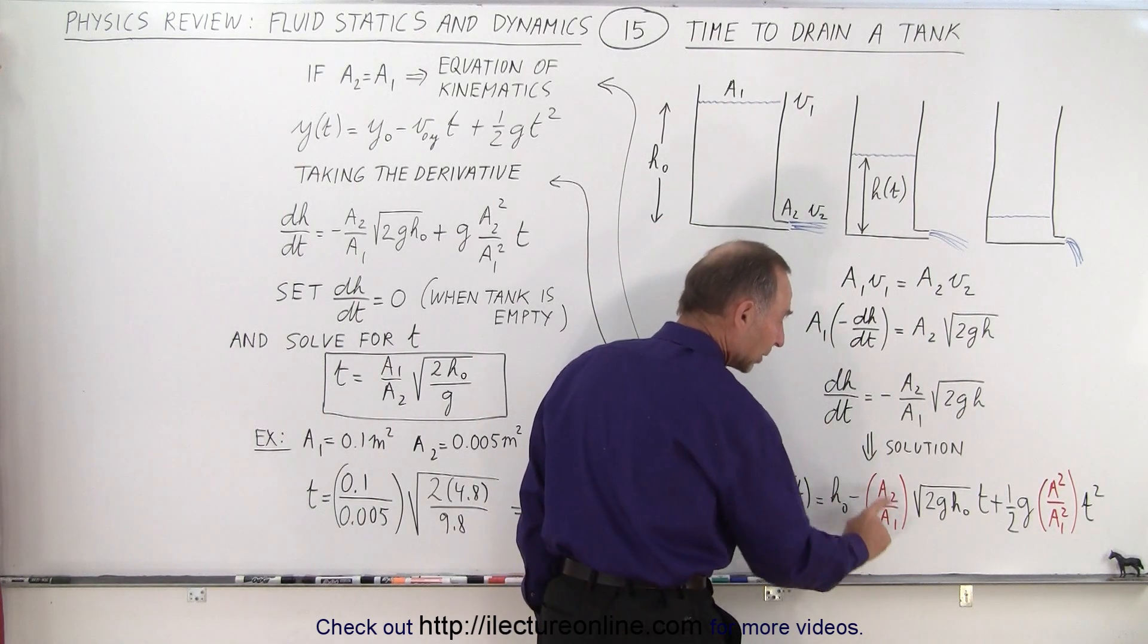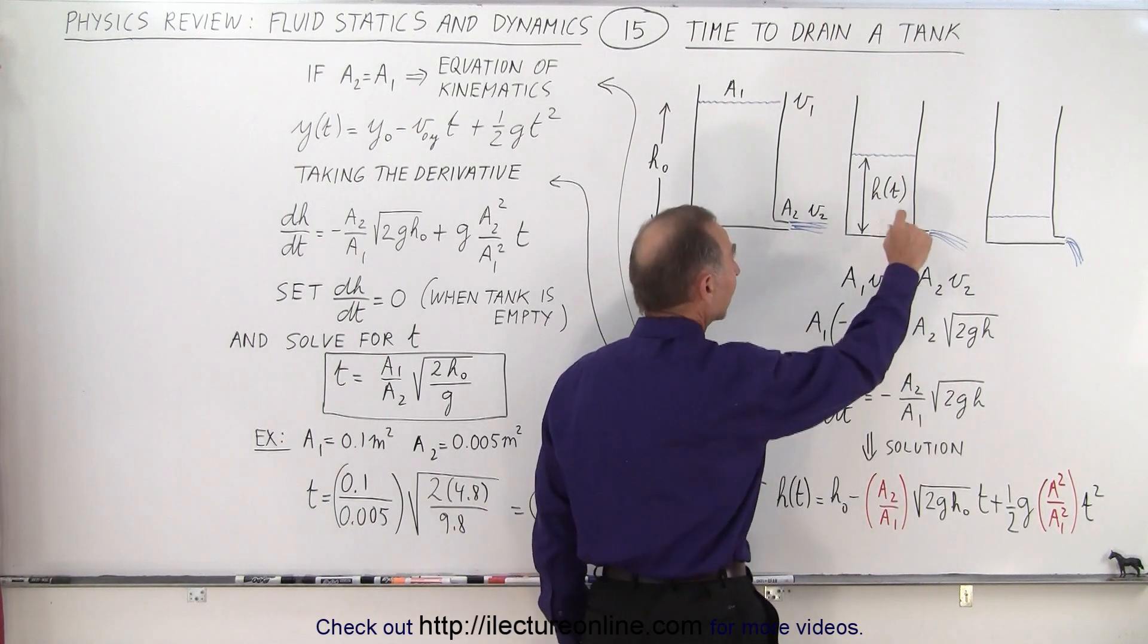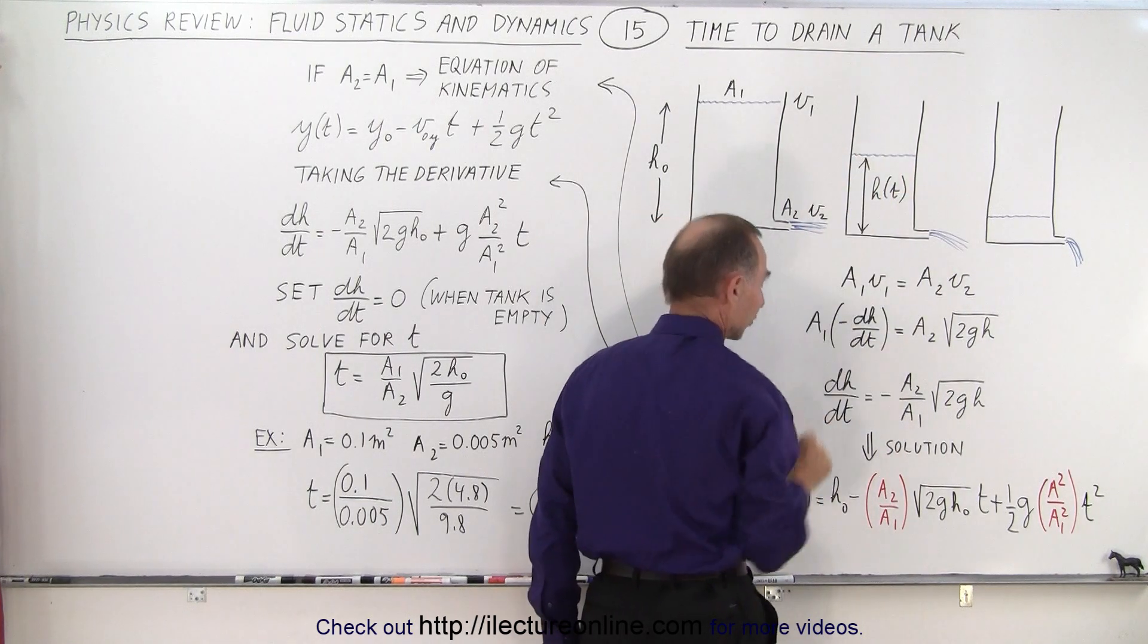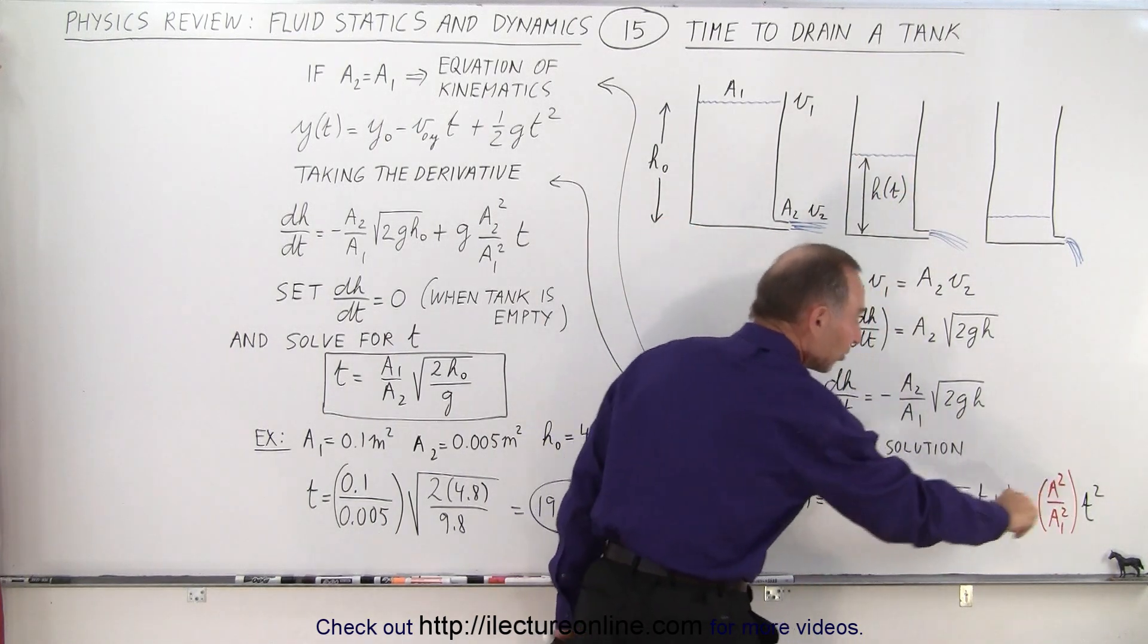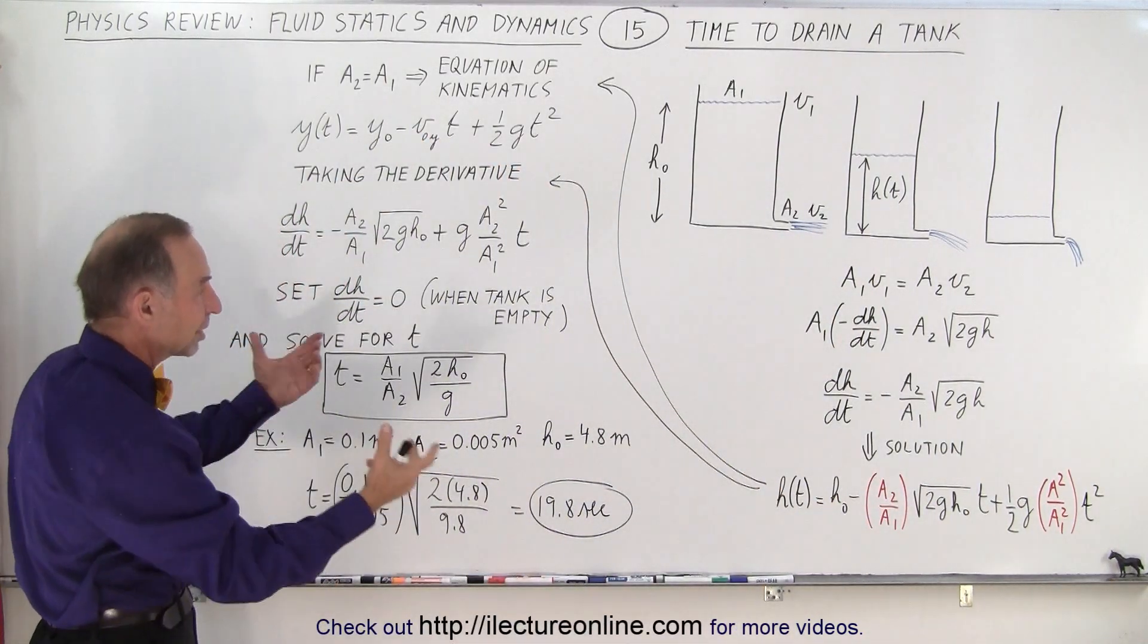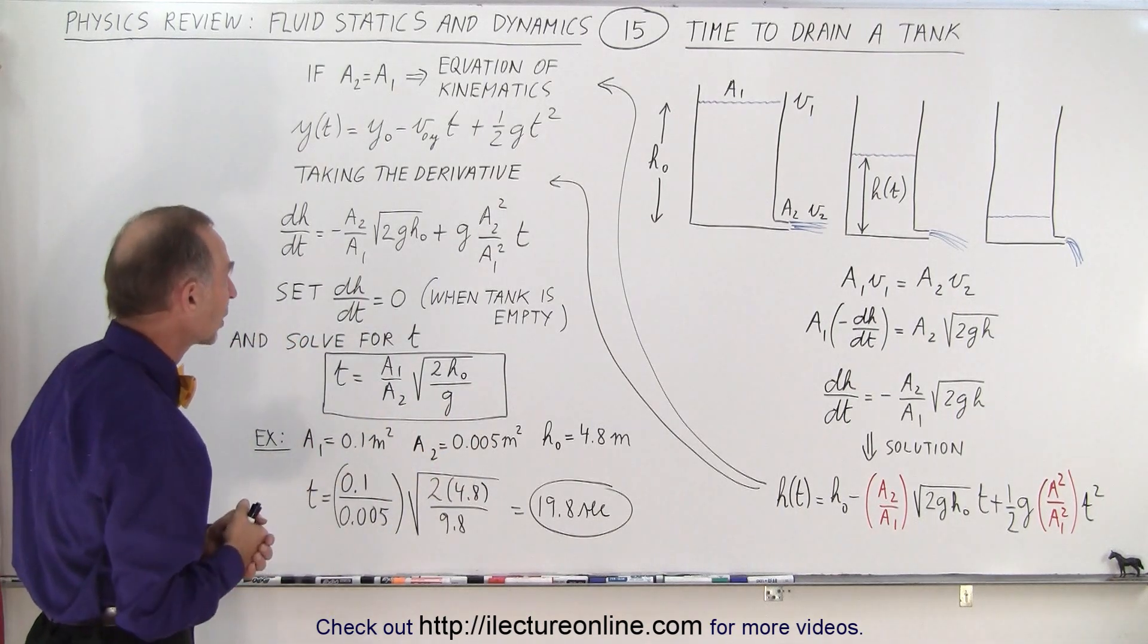that if a2 over a1 becomes equal to 1, when the cross-sectional area of the hole at the bottom is the same as the cross-sectional area at the top, then this becomes simply the equation of kinematics in the vertical direction. So you can see the similarity of the two equations.